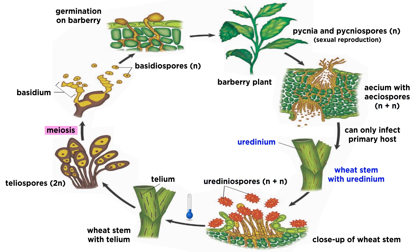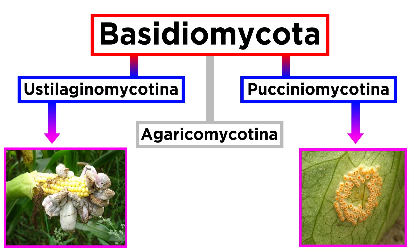Aeciospores are separated from urediniospores because the spore shape and productive process is quite different. Once aeciospores reach the wheat plant, they penetrate and begin producing a mycelium. Soon, that mycelium will produce dicaryotic urediniospores, and the cycle starts over again. So that covers two subphyla of the phylum Basidiomycota, but there are many more organisms in there to discuss, so let's move forward and examine some more.